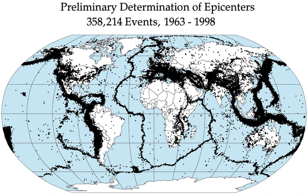Soil liquefaction occurs when, because of the shaking, water-saturated granular material temporarily loses its strength and transforms from a solid to a liquid. Soil liquefaction may cause rigid structures, like buildings and bridges, to tilt or sink into the liquefied deposits. For example, in the 1964 Alaska earthquake, soil liquefaction caused many buildings to sink into the ground, eventually collapsing upon themselves.